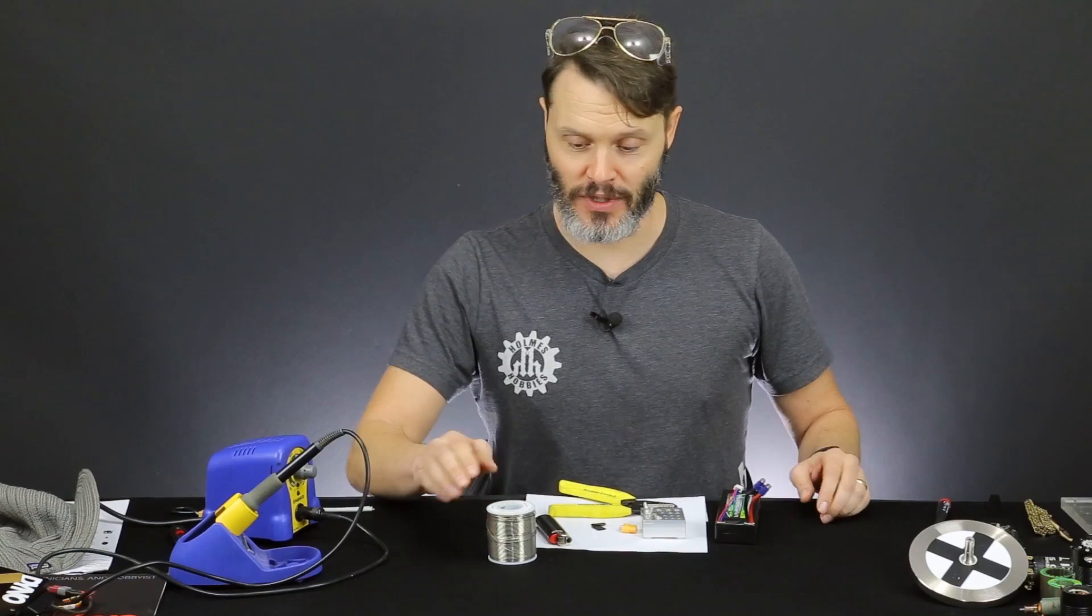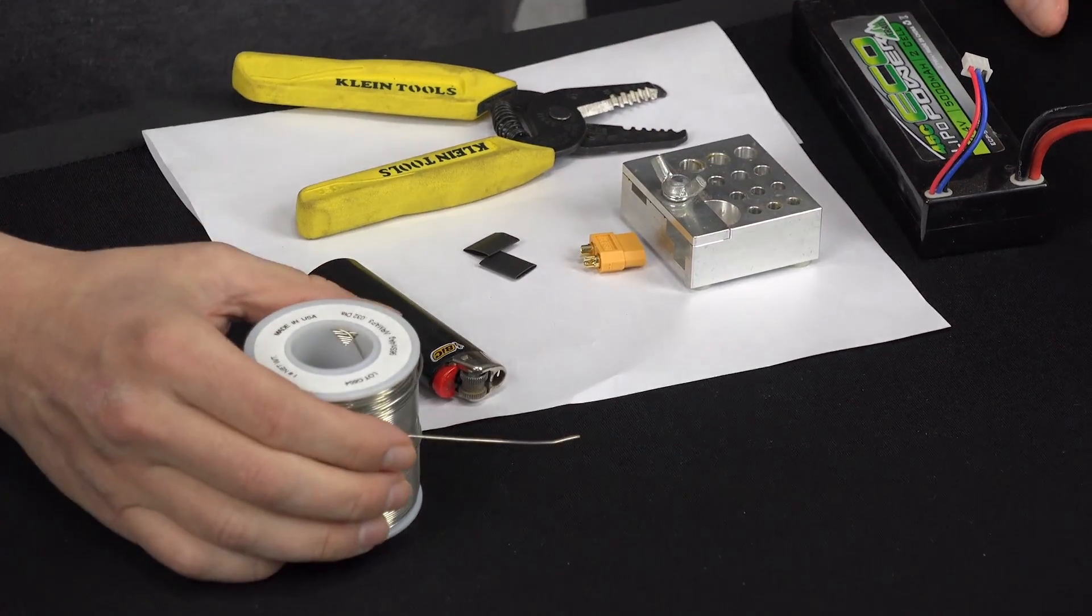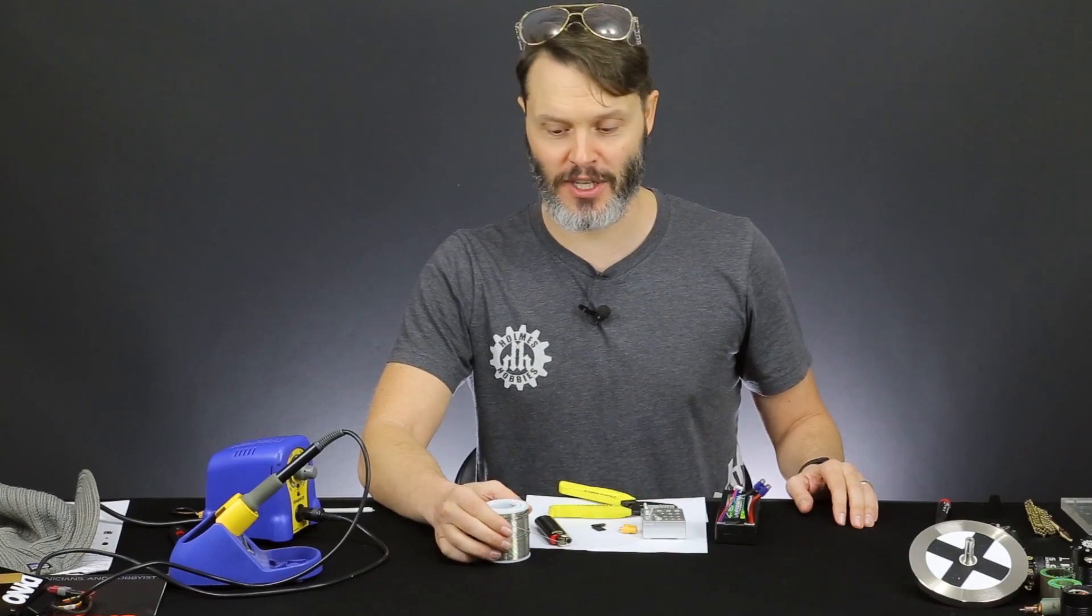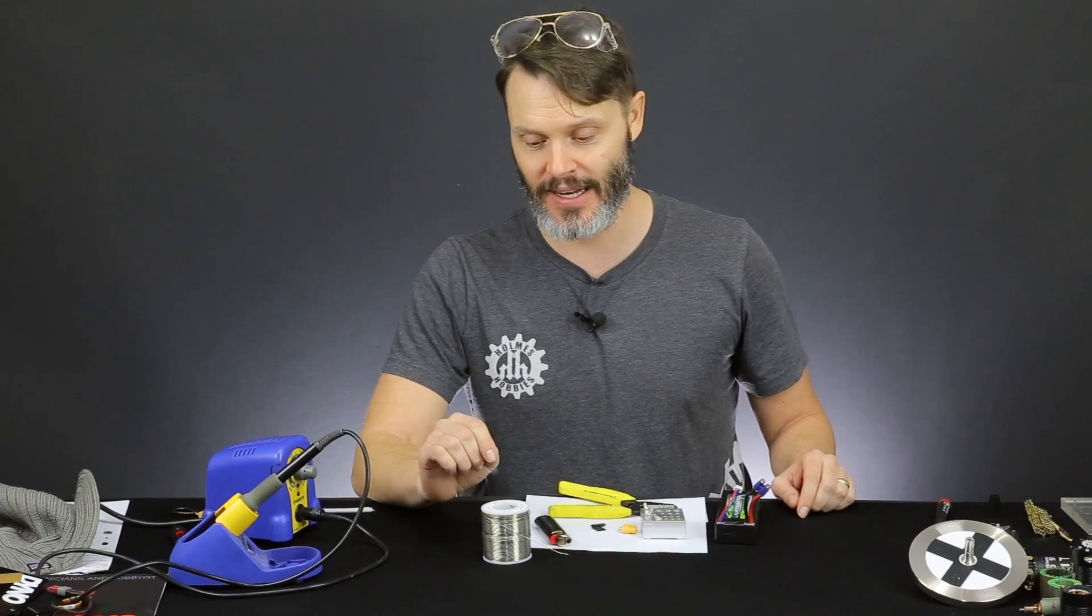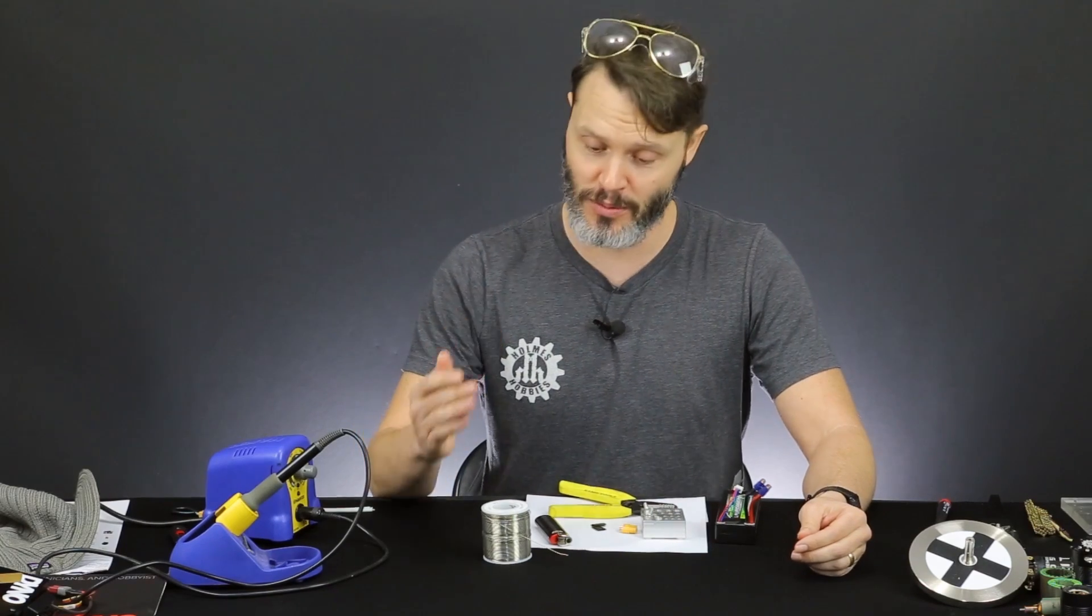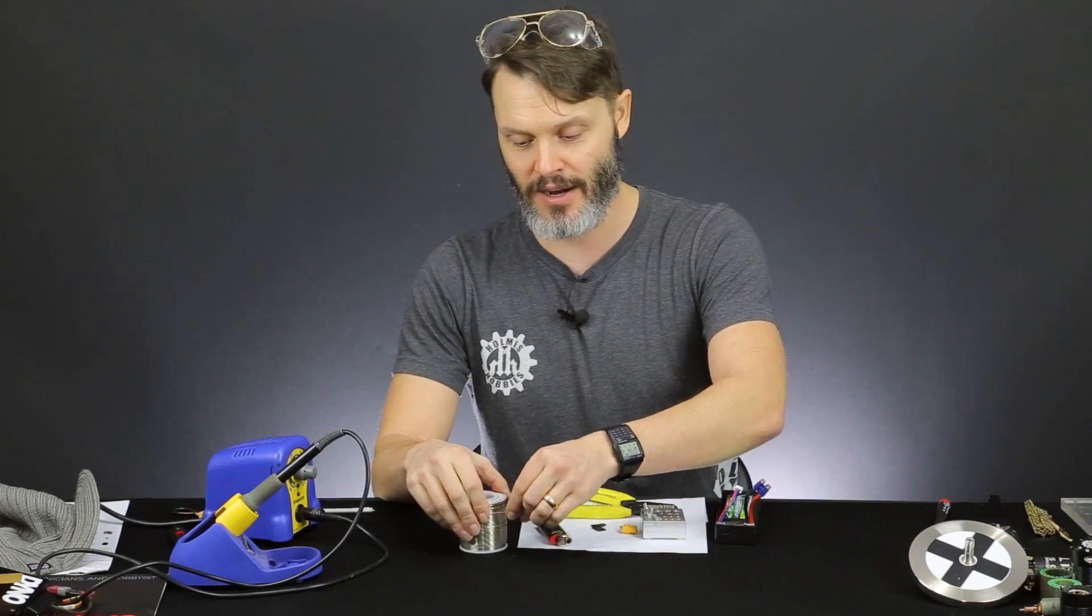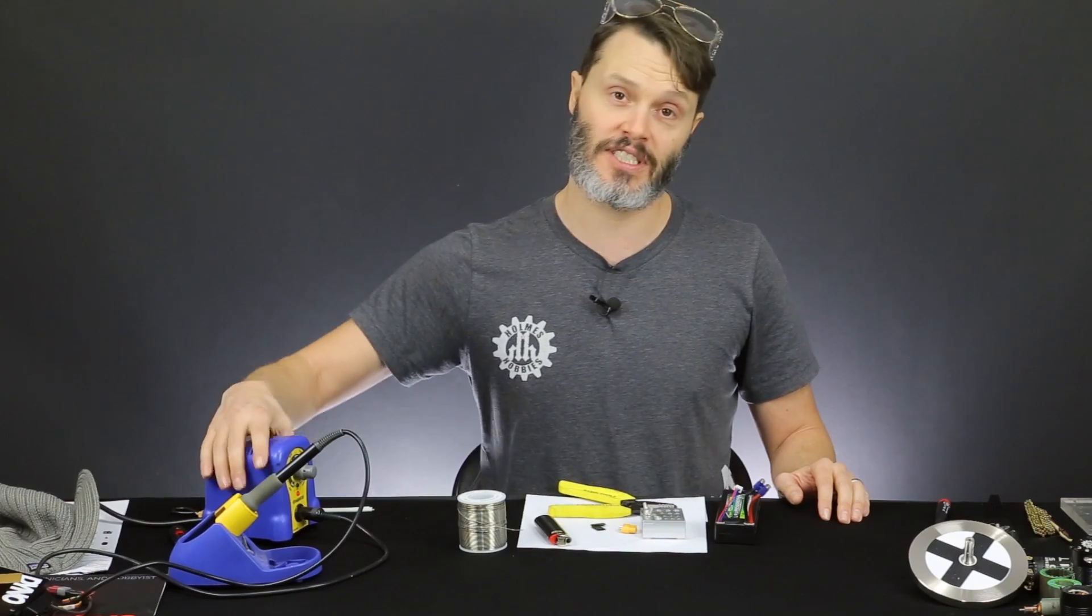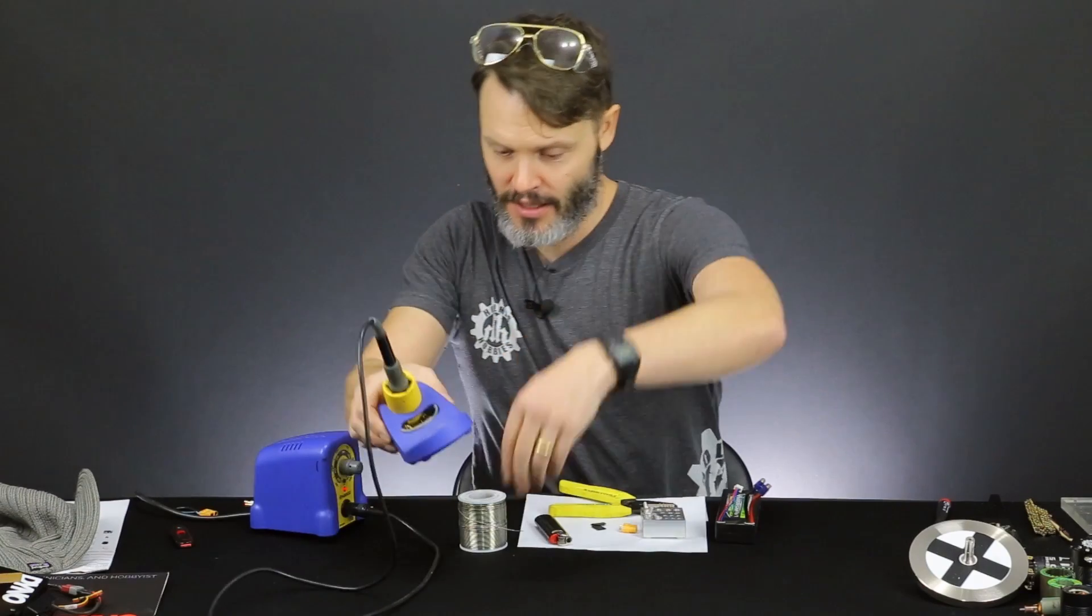And now we have solder. I will note that this is the 0.032 diameter solder from Holmes Hobbies. You can find it in a link down below. I like the smaller diameter because it's a lot easier to control the amount of solder that we put in and it is also lead free. It's a 4% solder with the remainder as tin. You don't have to worry about getting solder burned into your fingers, maybe having some solder fumes, some lead fumes getting into your face. I am a big fan of no lead in my solder these days, but this one is pretty easy to use because it has a 4% silver content.